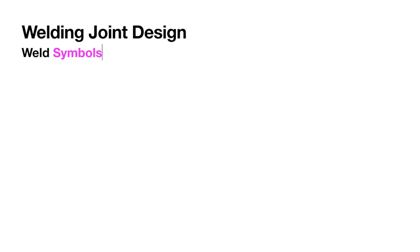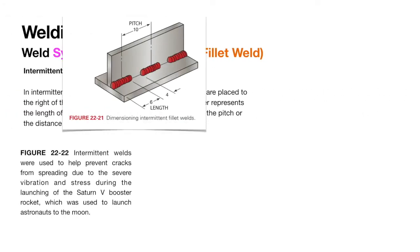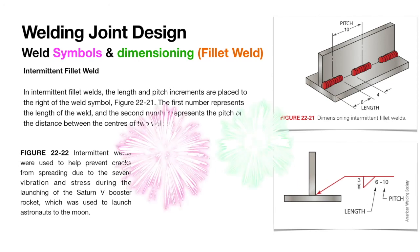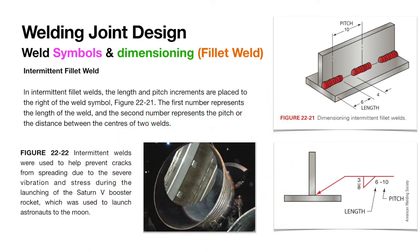We move to our next section which is intermittent fillet welding. Basically, intermittent fillet welding is used to strengthen the joint and to produce stress relaxation.